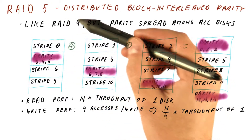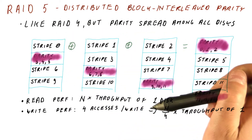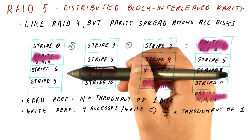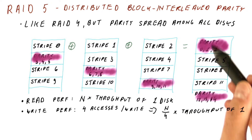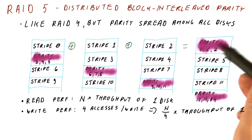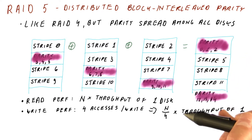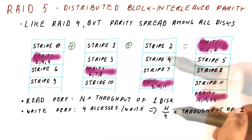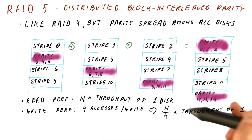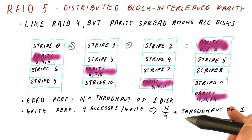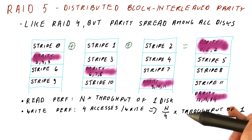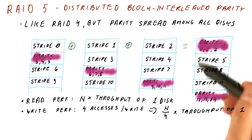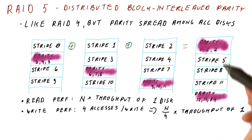Remember that in RAID 4, write performance is always limited to half the throughput of one disk. So here it would be half the performance of one disk versus the full performance of one disk — so we win. If we had, for example, eight disks, we would get twice the throughput of one disk. With RAID 4, the eight disks would still have a single parity disk, and the write performance would still be half the throughput of that one disk.